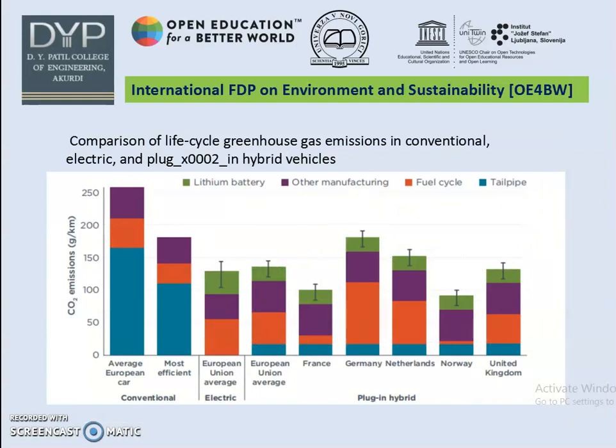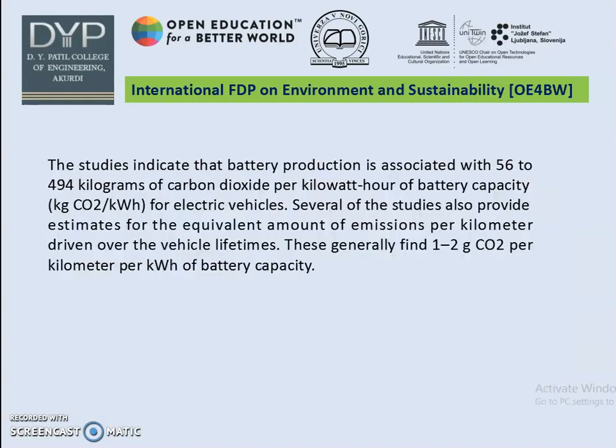Here you can find the comparison of life cycle greenhouse gas emissions in conventional, electric, and plug-in hybrid vehicles. Studies indicate that battery production is associated with 56 to 494 kg of CO₂ per kWh of battery capacity for electric vehicles. Several of these studies also provide estimates for the equivalent emissions per km driven over the vehicle lifetimes, generally finding 1 to 2 g CO₂ per kWh of battery capacity.